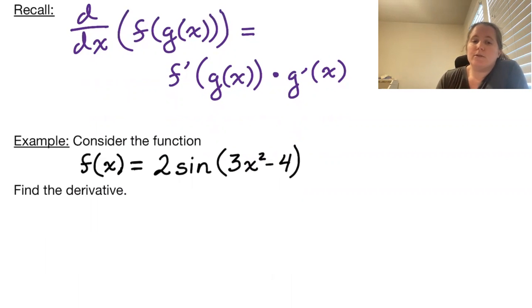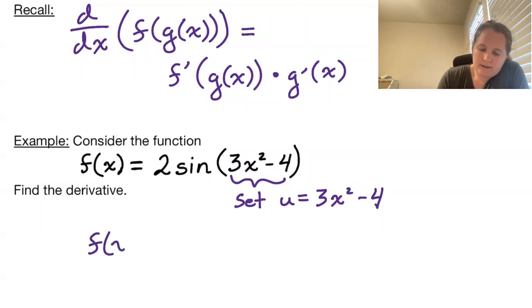For this example, if we have f of x equals 2 sine of 3x squared minus 4, we have an inside function u equals 3x squared minus 4, so we are essentially looking at f of x equals 2 sine of u.